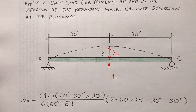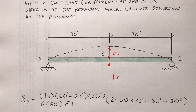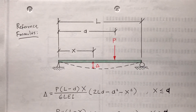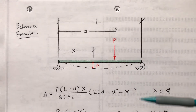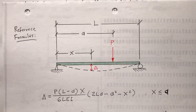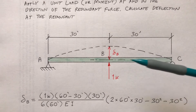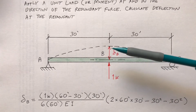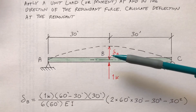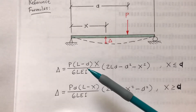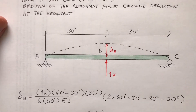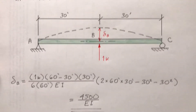Using that same formula again — delta sub B — I can use either the first or second formula. In this case, both A and x are equal to 30 feet, and L is 60 feet. So L is 60, A is 30, x is 30. Working through the formula, the deflection delta sub B based on this loading configuration is 4500 over EI. This delta sub B is sometimes called the flexibility coefficient.